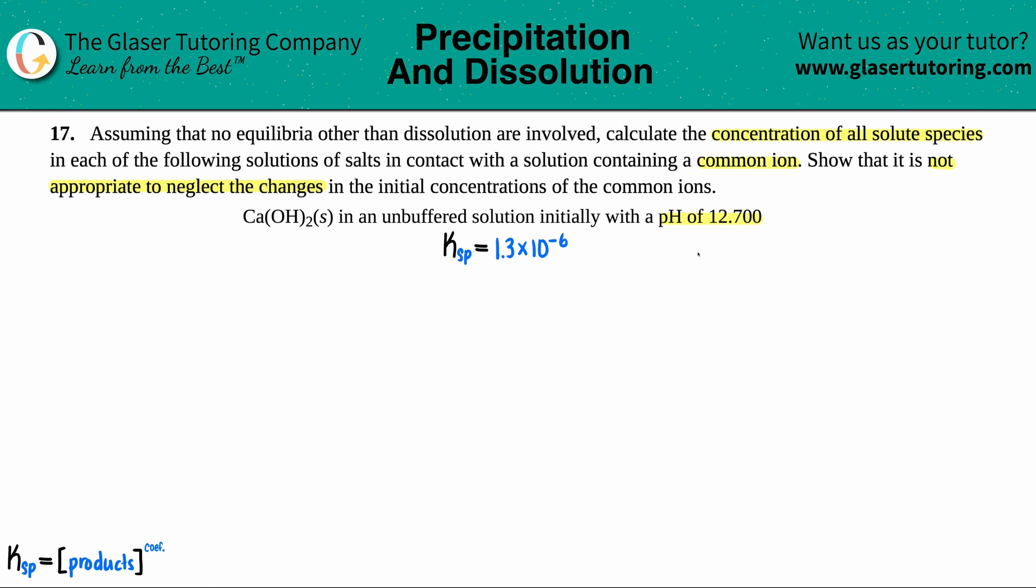We're talking about dissolution. We have a solid, so we need to find out what that KSP value is. I went in the back of the textbook to find out that the KSP value, the solubility product, of calcium hydroxide is 1.3 times 10 to the negative 6. KSPs are always for the solid guys. If they give you a KSP, we have to write a balanced equation.